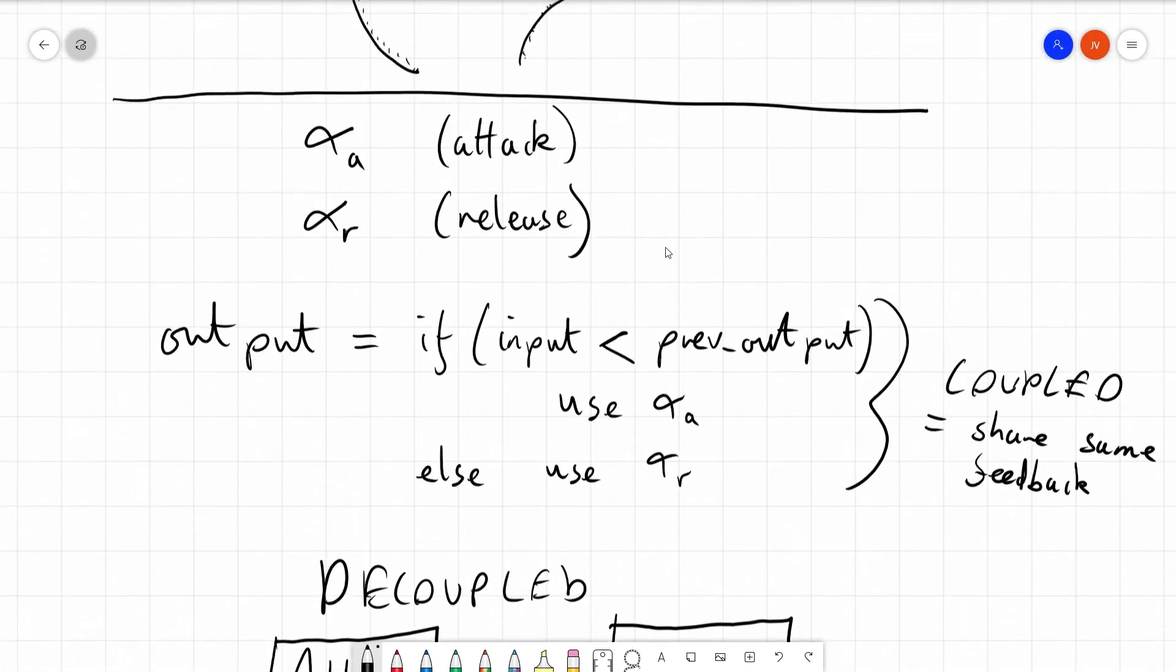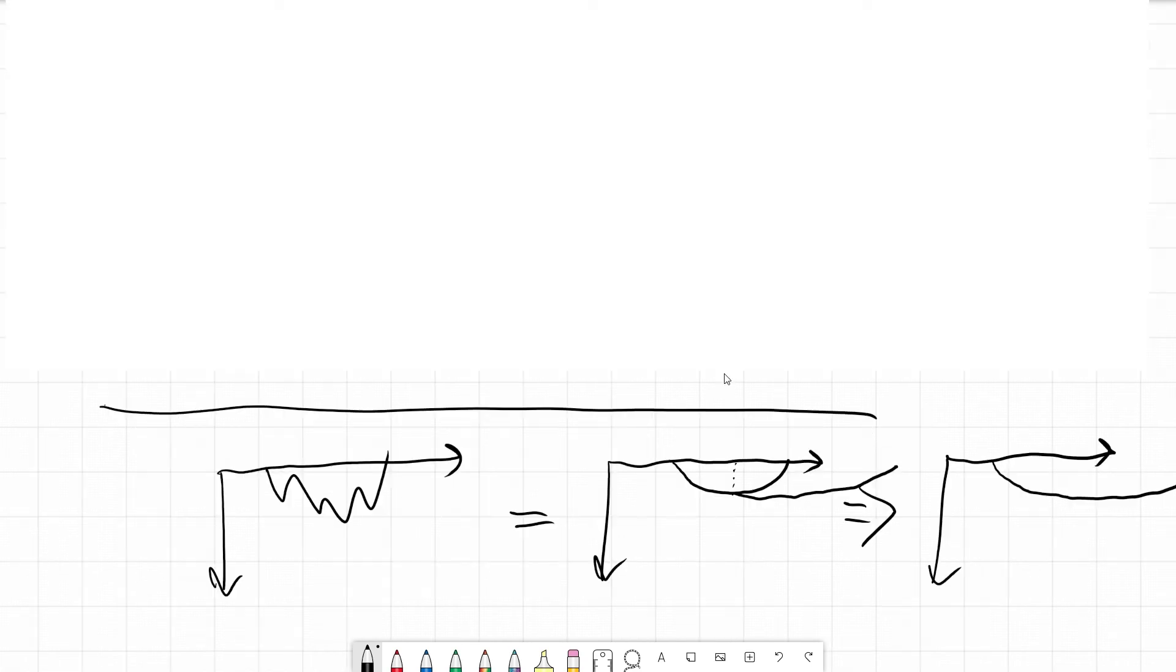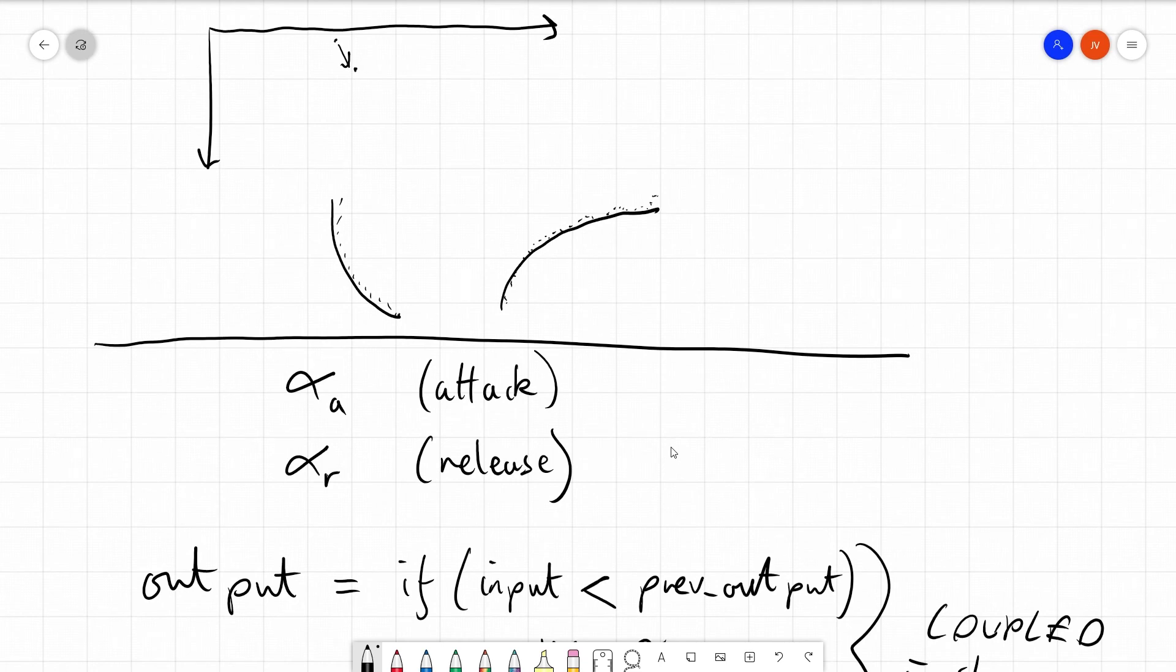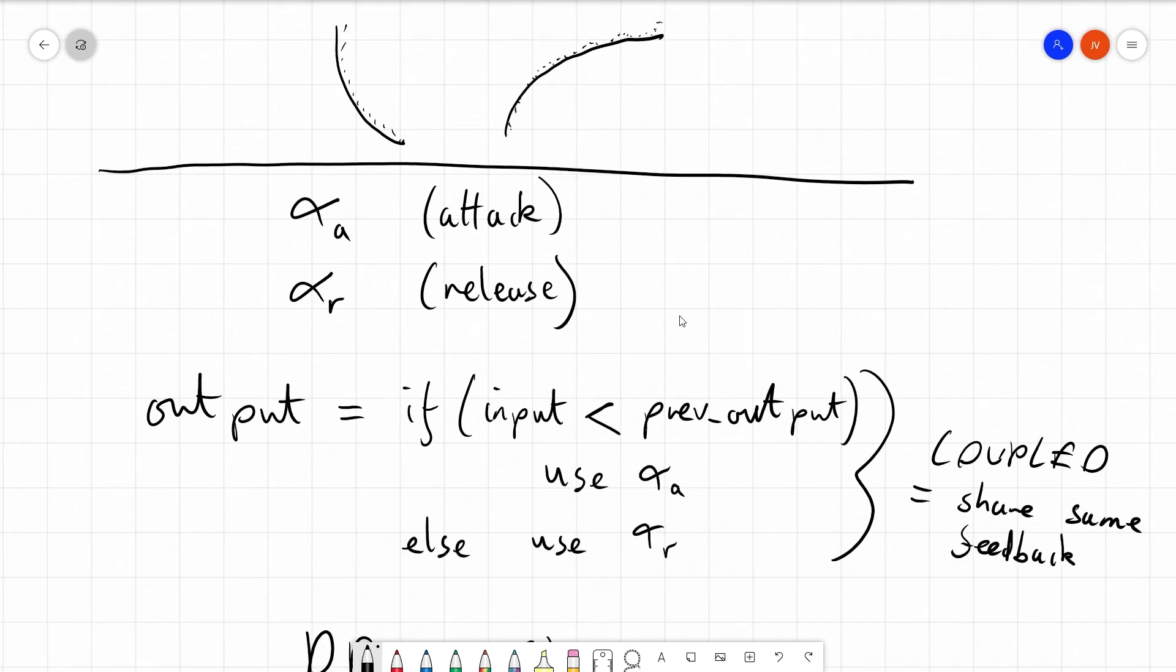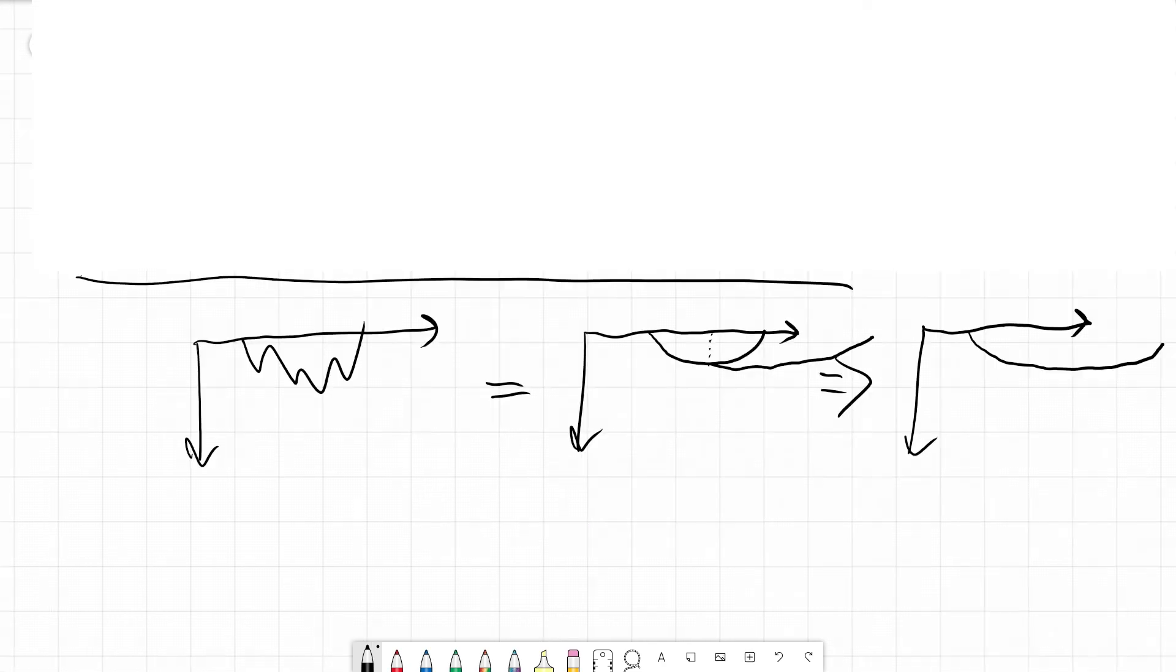Whereas with the branching, you're sharing the same feedback and rapidly switching. And in the branching or coupled detector, yes, the attack and the release do affect each other, because you really only got one detector, but in a slightly more complicated way. And I hope that makes sense.